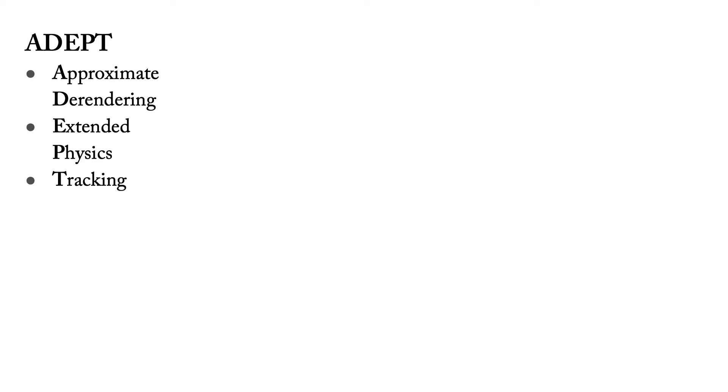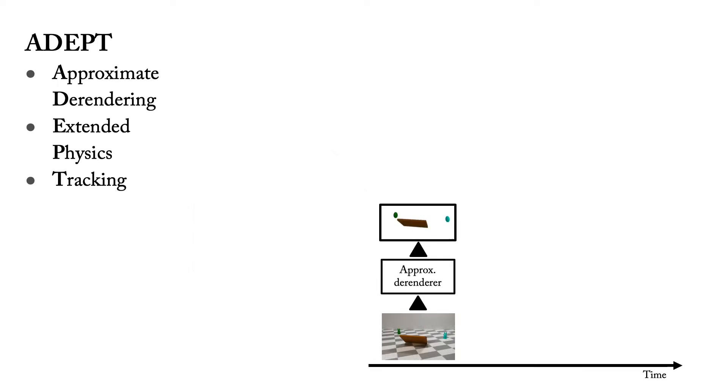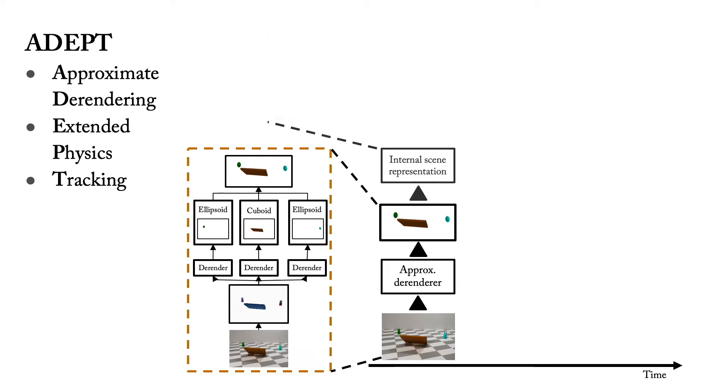ADEPT has two parts, a perception module and a reasoning module. The perception module derenders objects by segmenting them and extracting coarse attributes from each segment. The coarse representation helps generalize to unseen objects. The reasoning module uses a probabilistic physics engine to unfold the belief state over time.